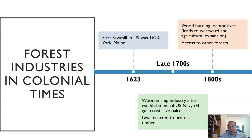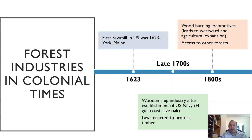Live oak was an important tree to the US Navy. Back in the 1700s and the Revolutionary War period, the US Navy had wooden ships and their preferred species was live oak down on the Florida Gulf Coast. In the late 1700s, laws were enacted to protect this area because of its importance to the US Navy.